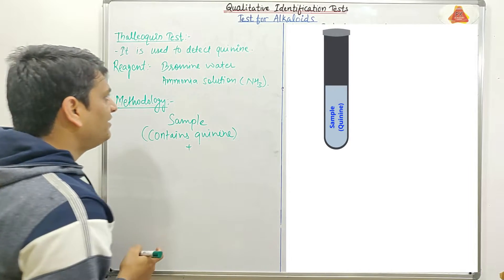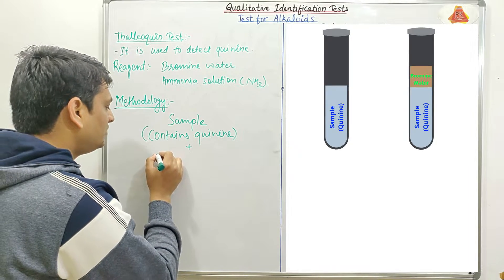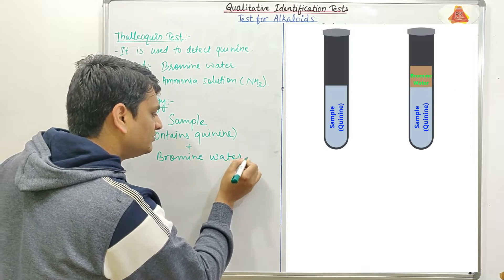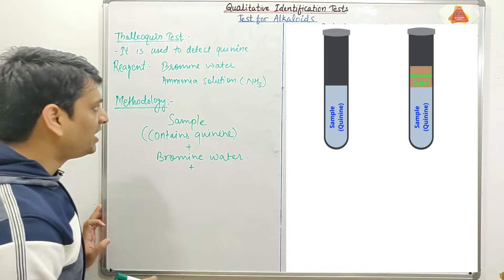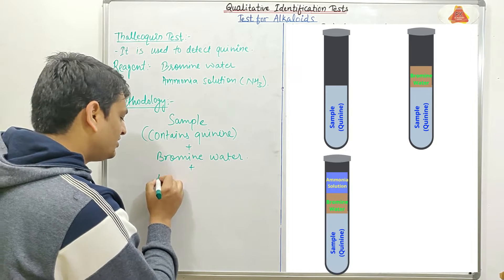After that we will add Bromine water to the sample, and then we will add Ammonia solution.